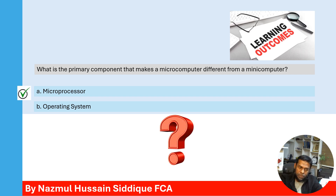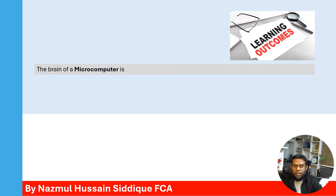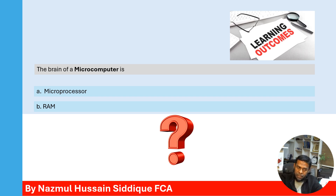The correct answer is Option A: Microprocessor. The microprocessor is what makes a microcomputer different from a minicomputer. Next question: What is the brain of a microcomputer — microprocessor or RAM? The correct answer is the microprocessor; the brain of a microcomputer is the microprocessor.